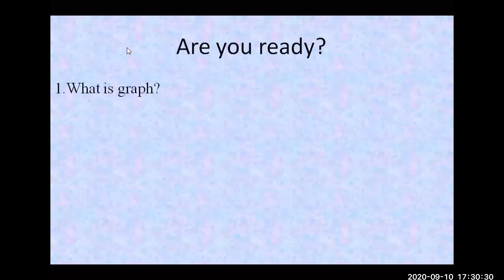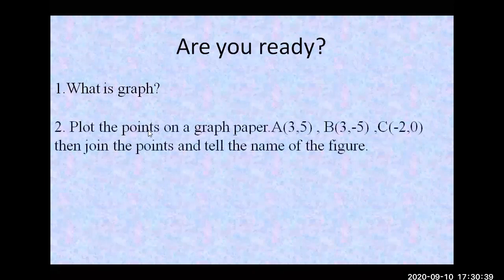Now some practice questions: What is a graph? Also, plot the following points on a graph paper: A(3, 5), B(3, −5), and C(−2, 0). Join the points and identify the name of the figure you get — it may be a triangle.